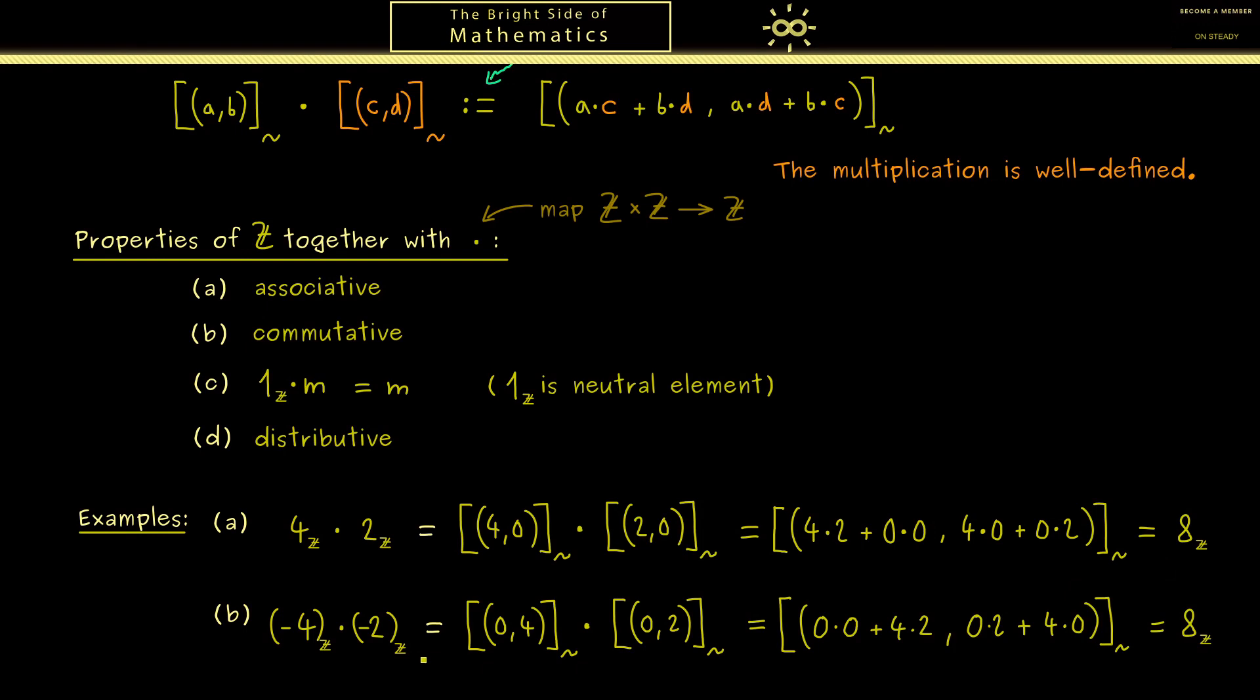Therefore you see here the general rule that comes out. If you multiply two negative numbers you always get out a positive number. So you see the integers are very interesting and you can do nice calculations with them. However you immediately see one flaw here. You don't find inverses with respect to the multiplication. For example, you don't find a number you can multiply with 2 such that 1 comes out. In order to do this we need even more numbers. And that's what we do in the next video. Therefore I hope I see you there and have a nice day. Bye!